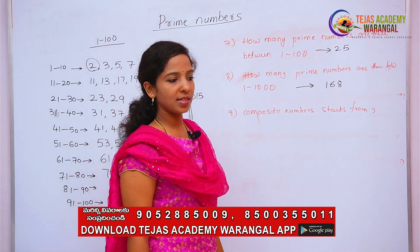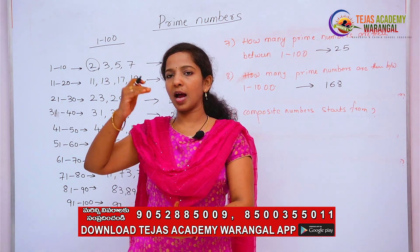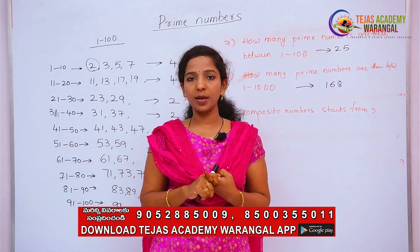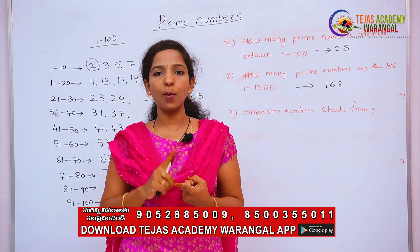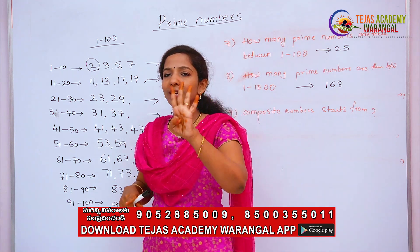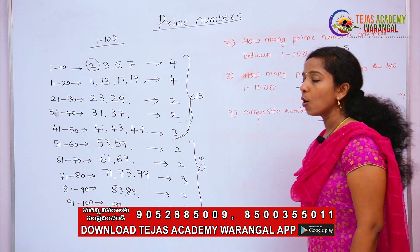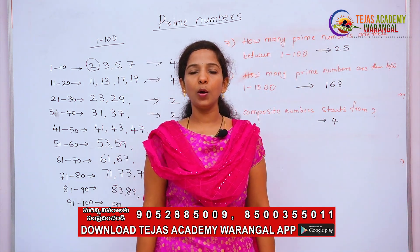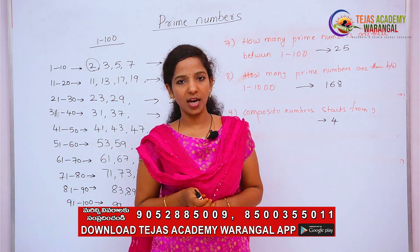Now, what about composite numbers? A composite number is any number that is not a prime number. Is one a composite number? No — one is neither prime nor composite. Composite numbers start from 4. Prime numbers start from 2.